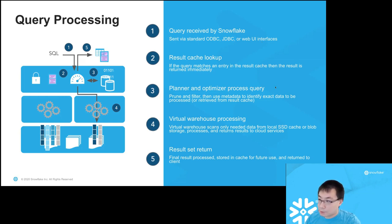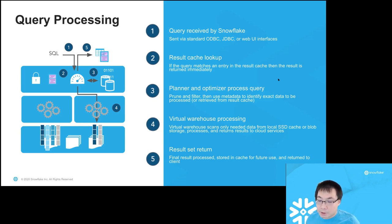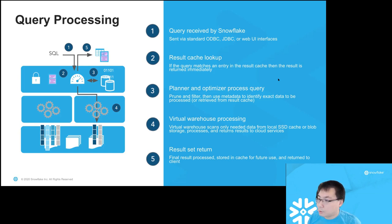Regarding result cache aggressiveness: if the version of the table has changed, we can still check what we call the scan set — the set of micropartitions to scan after pruning. If that's the same, we can still use the result cache. We do certain optimizations before deciding whether a result is reusable, including reusing results of subqueries. There are also things we don't do yet that we'd like to improve. The result cache is pretty widely used, especially in the OLAP world where many tools issue the same queries over and over.